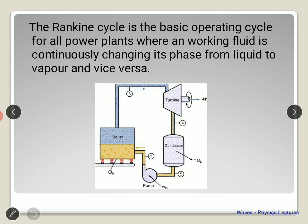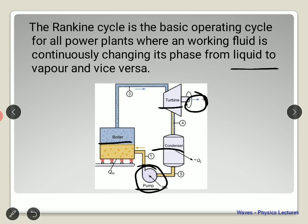In the Rankine cycle, it starts at the boiler, then goes to the turbine, then to the condenser, and then you have the pump. Work is done in two places: in the turbine and in the pump. The pump drags the water from the condenser back to the boiler. The Rankine cycle is the basic operating cycle of all power plants where the working fluid continuously changes phase from liquid to vapor and vice versa — that's why it's called a cycle.